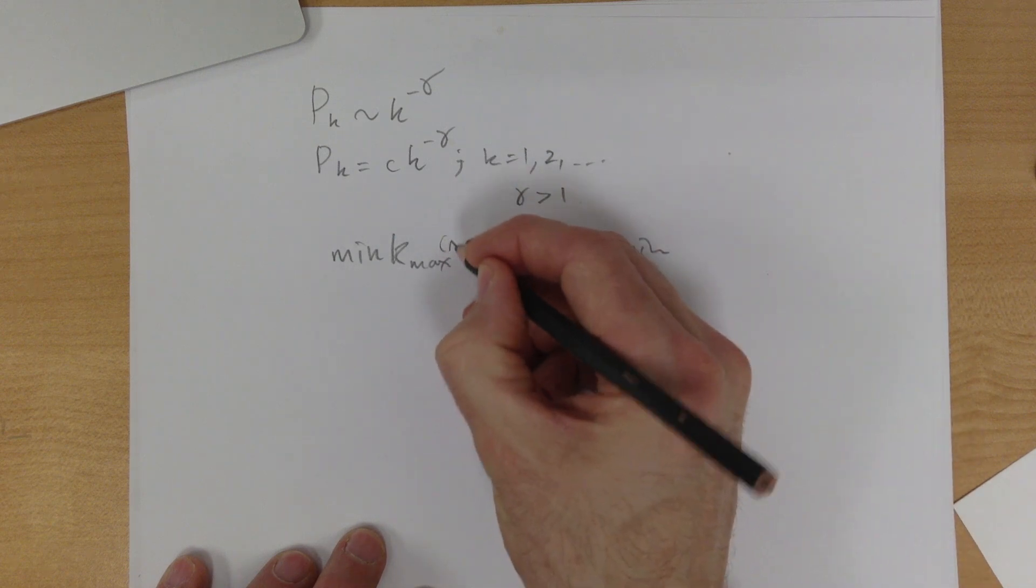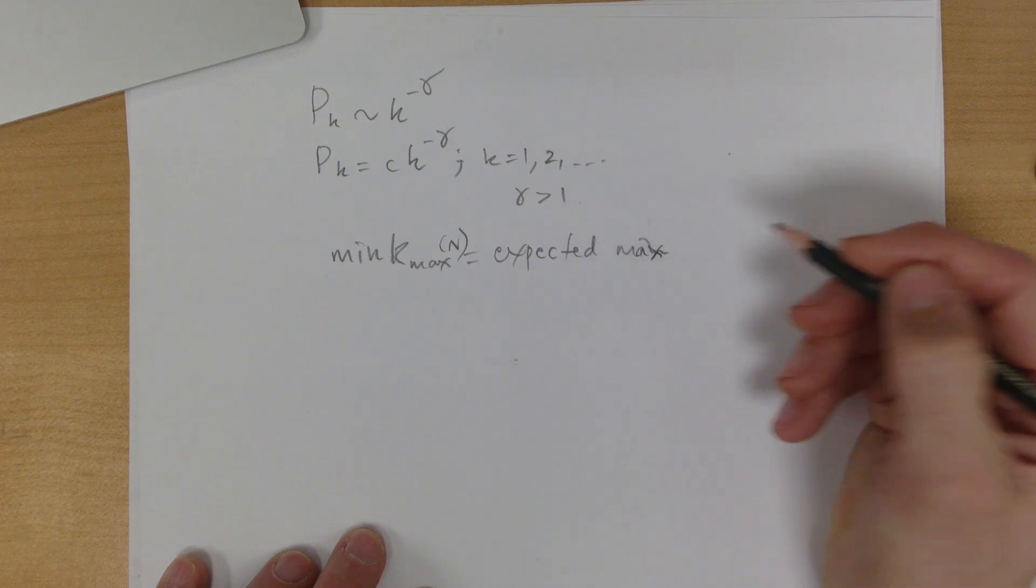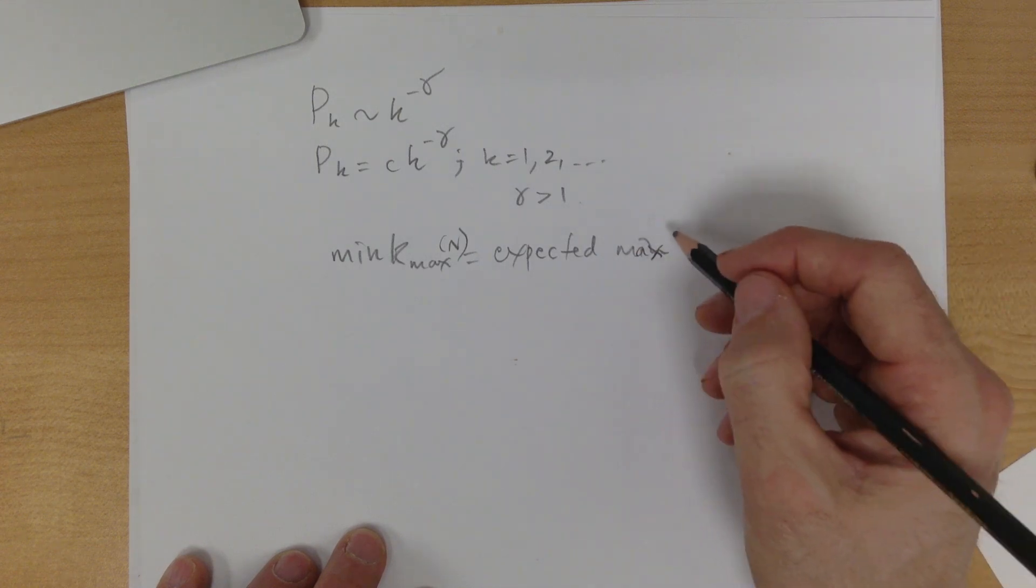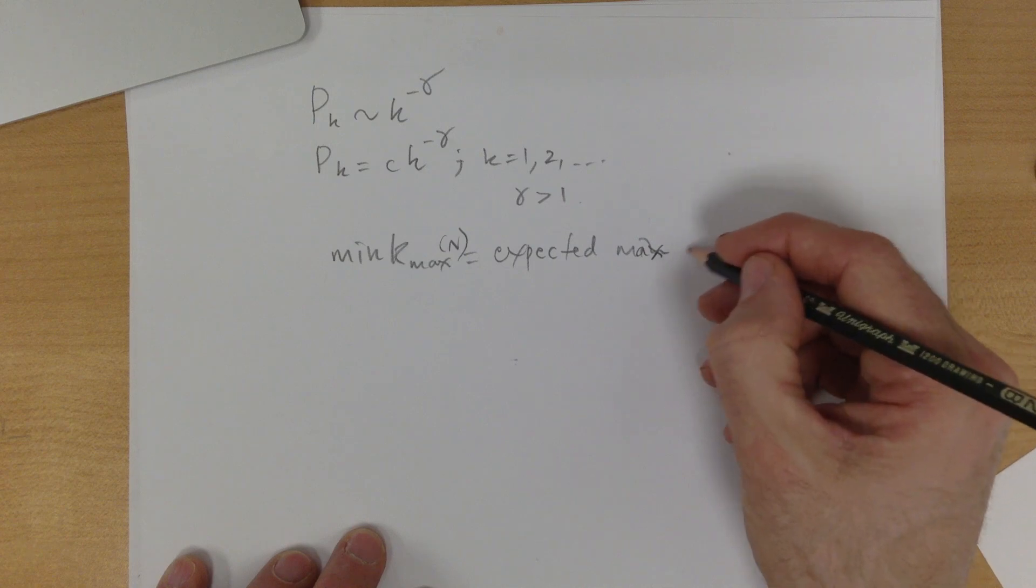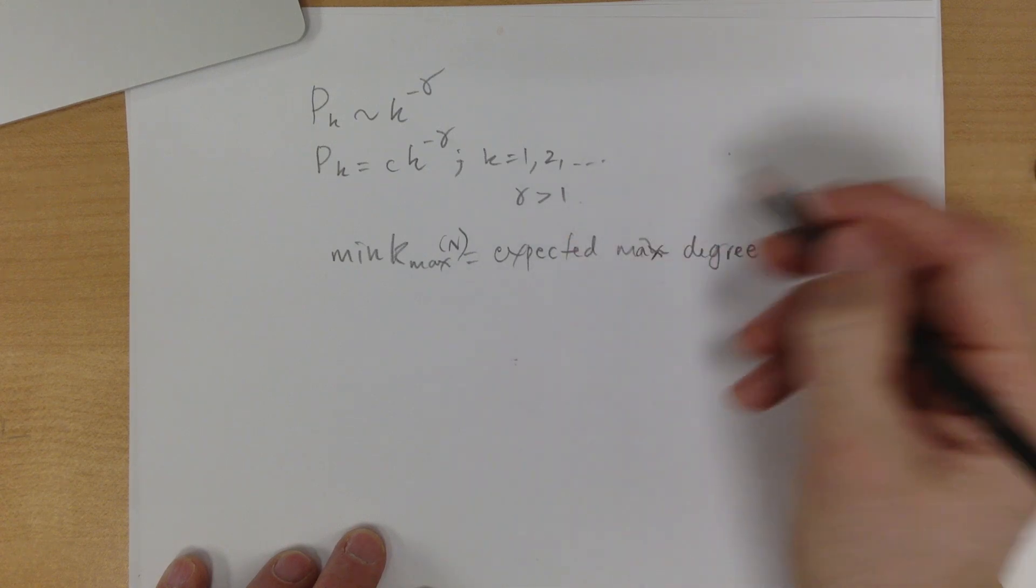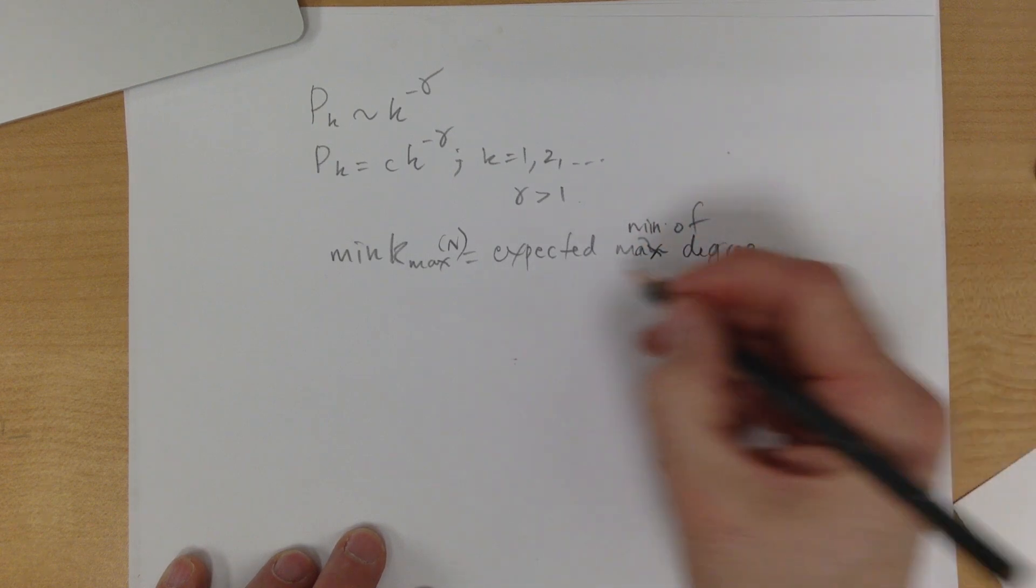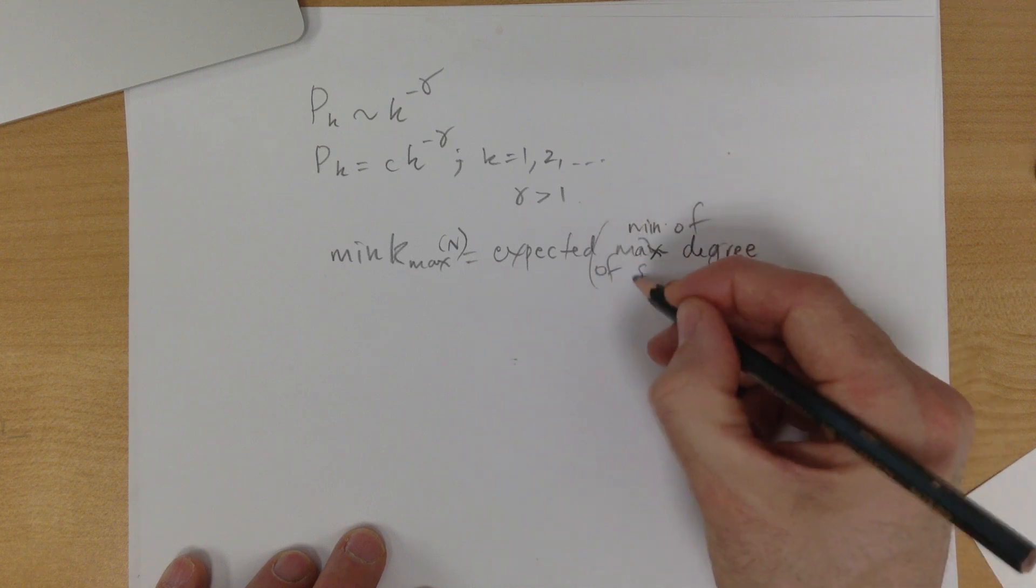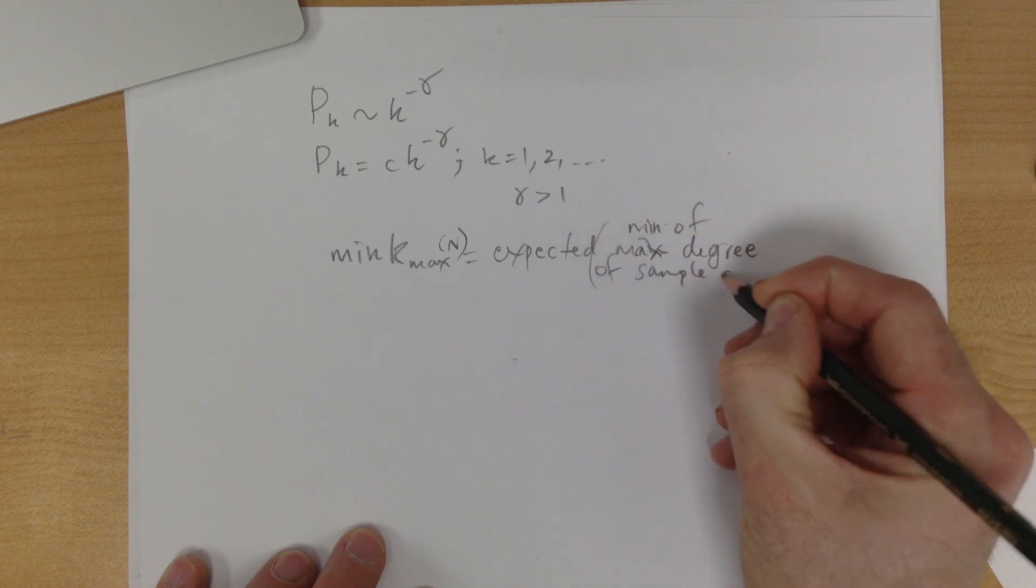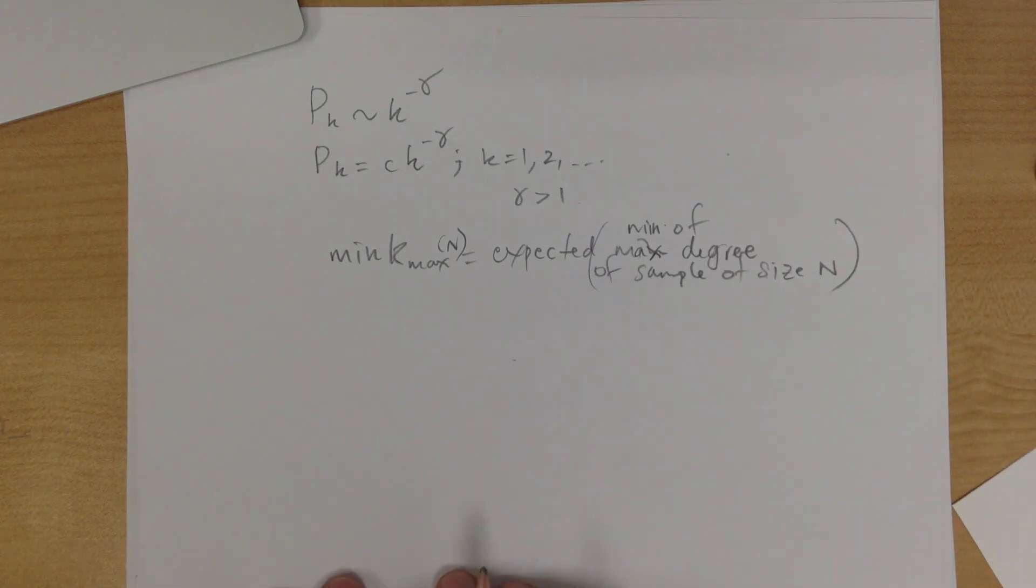And so this is going to be a function of N. Minimum expected max, right, the expected max degree and the minimum of that. So it's the min of max degree of sample of size N.